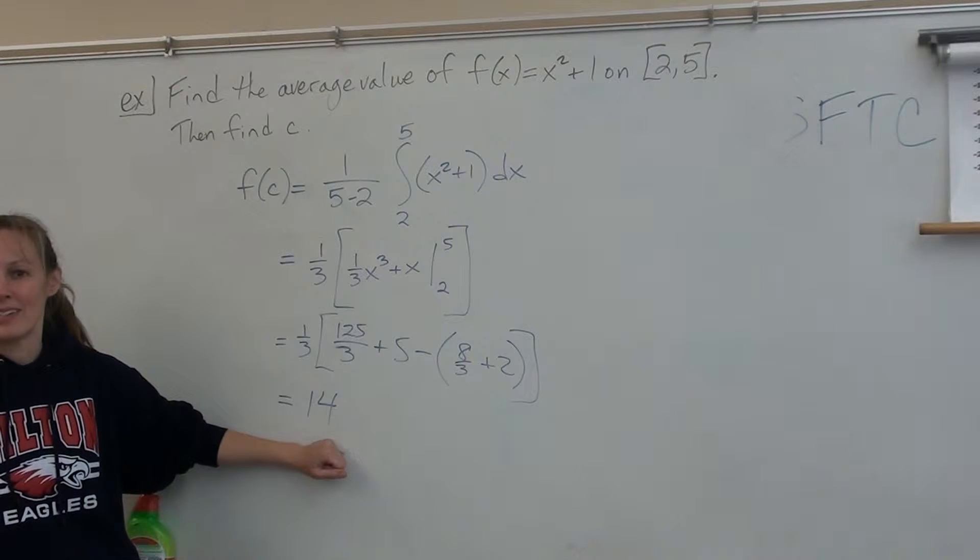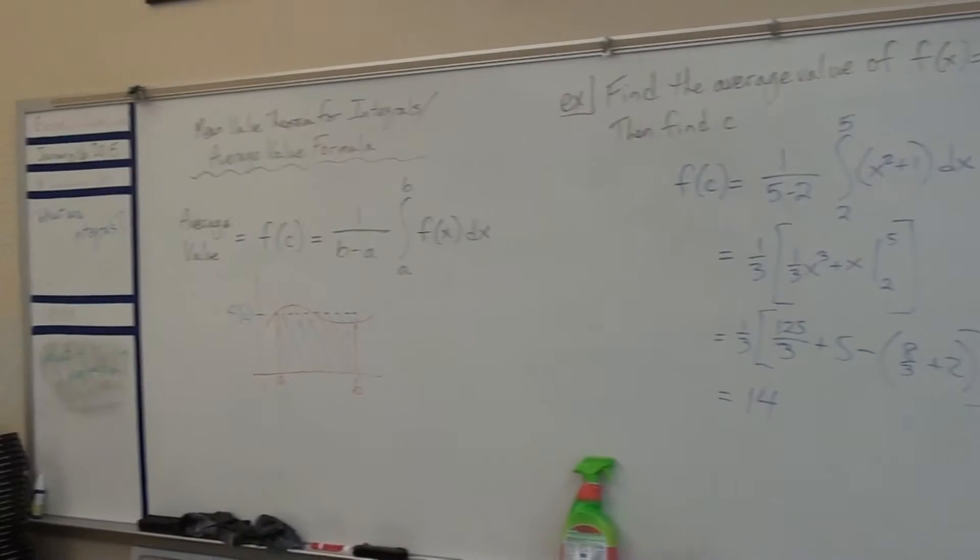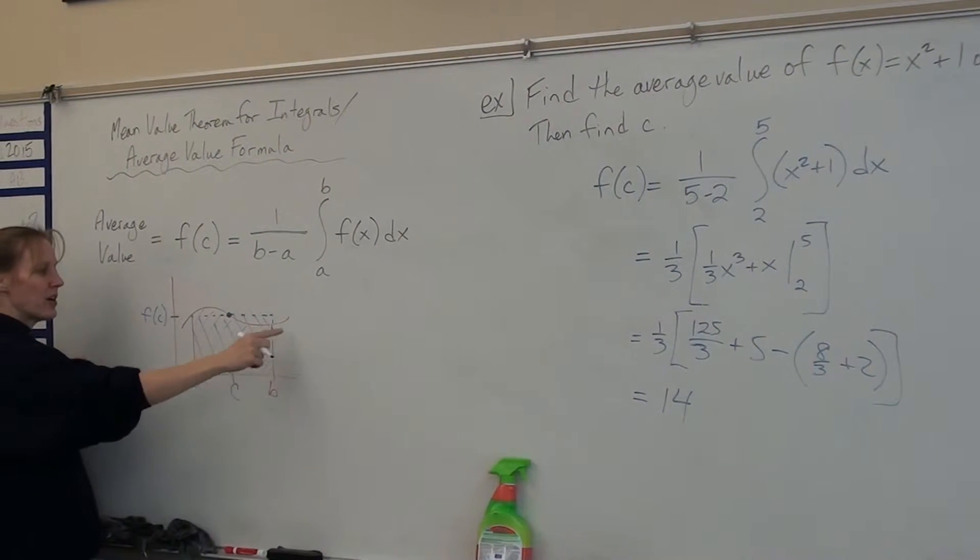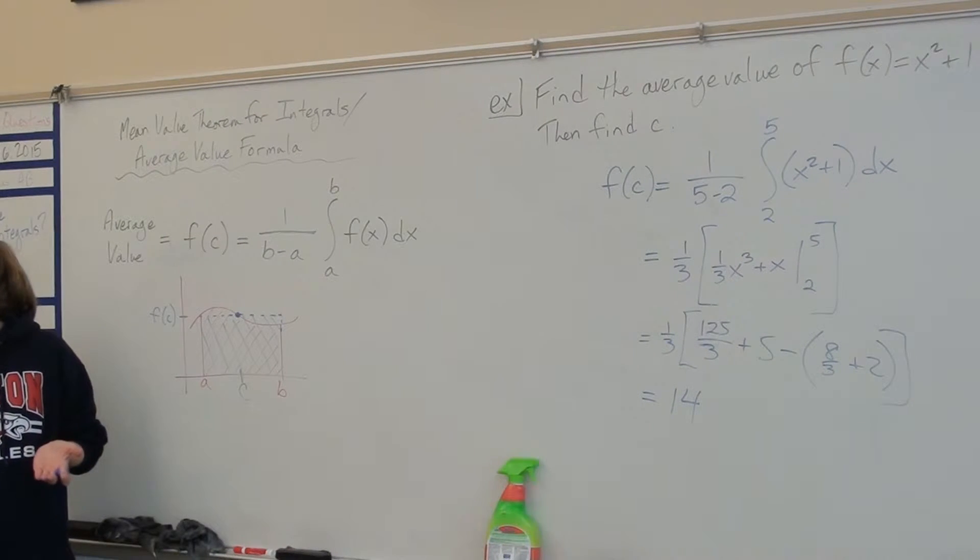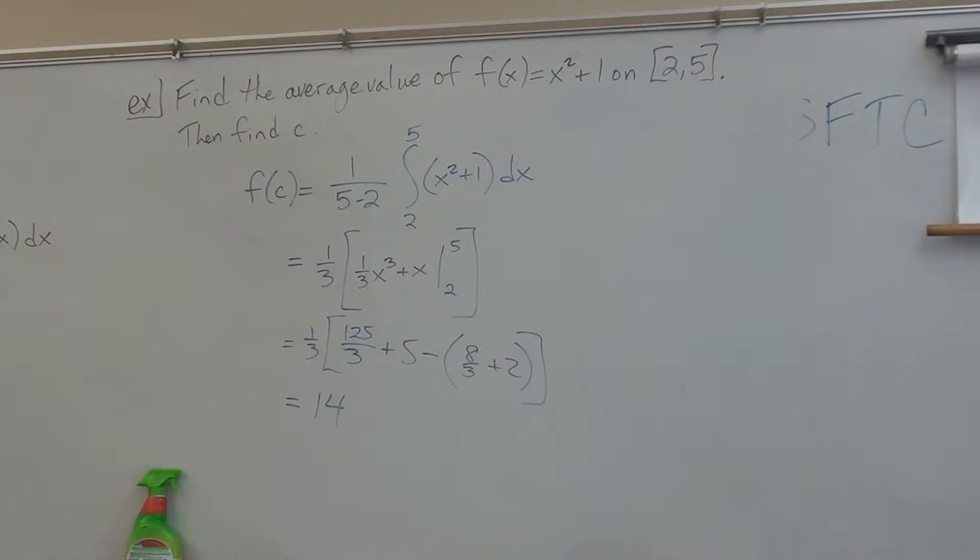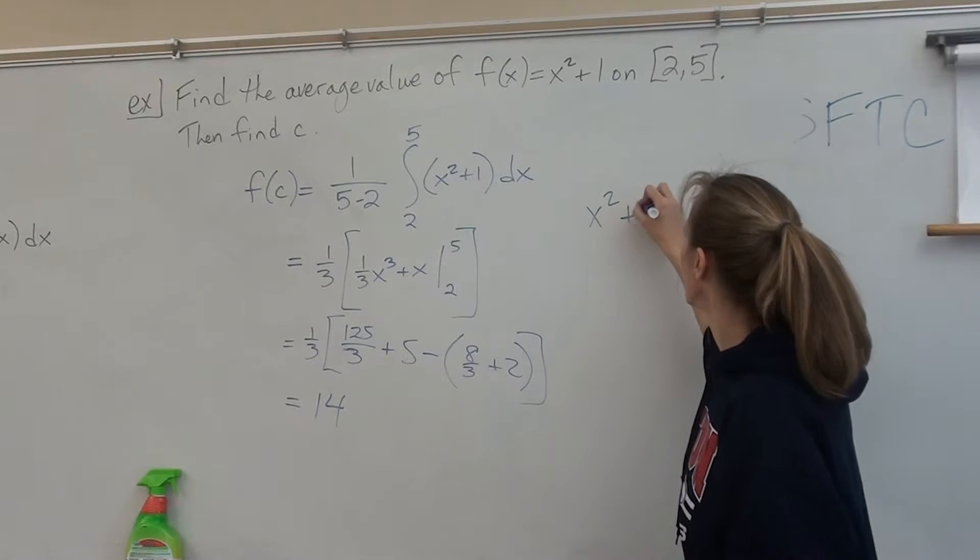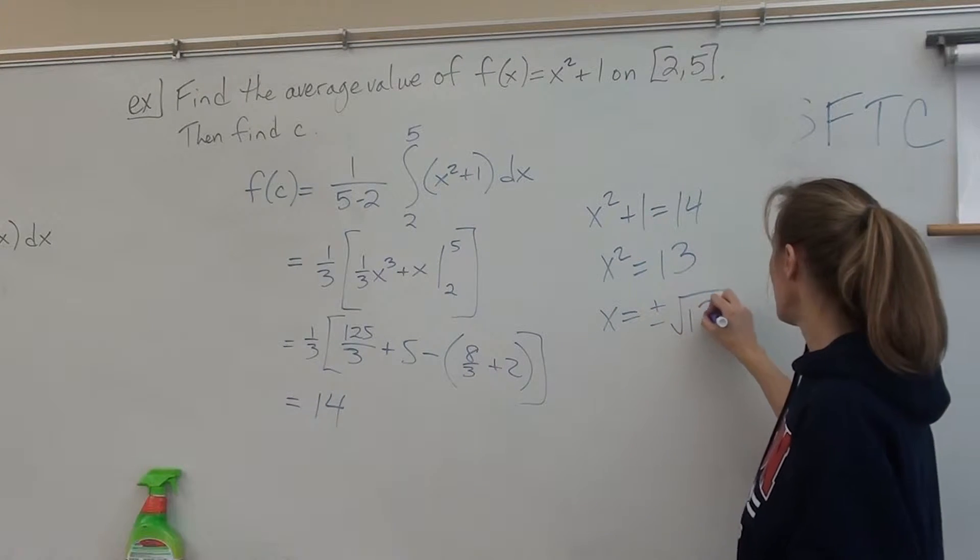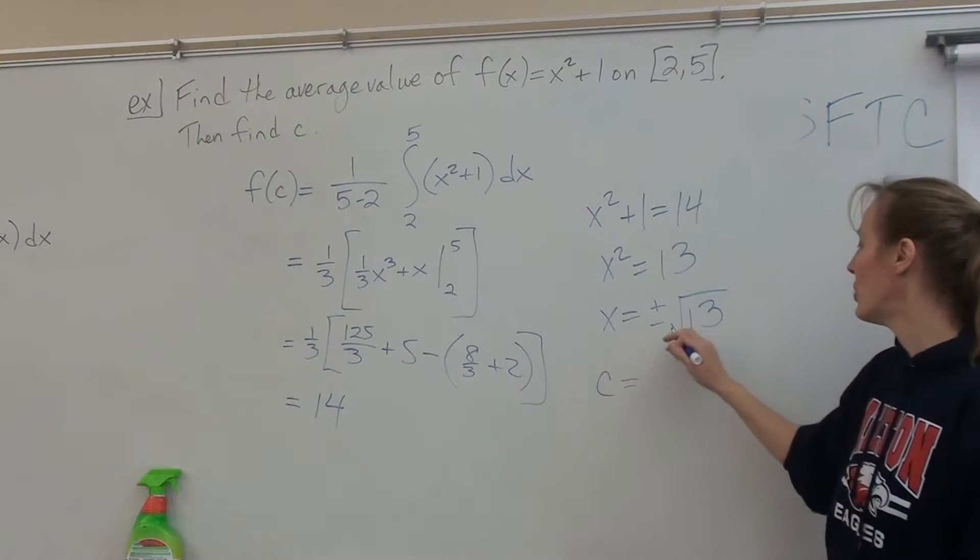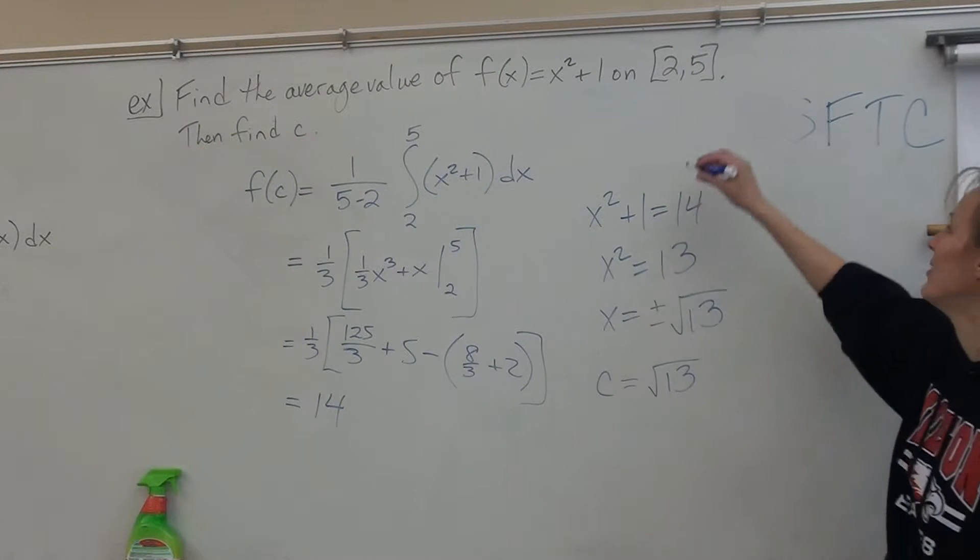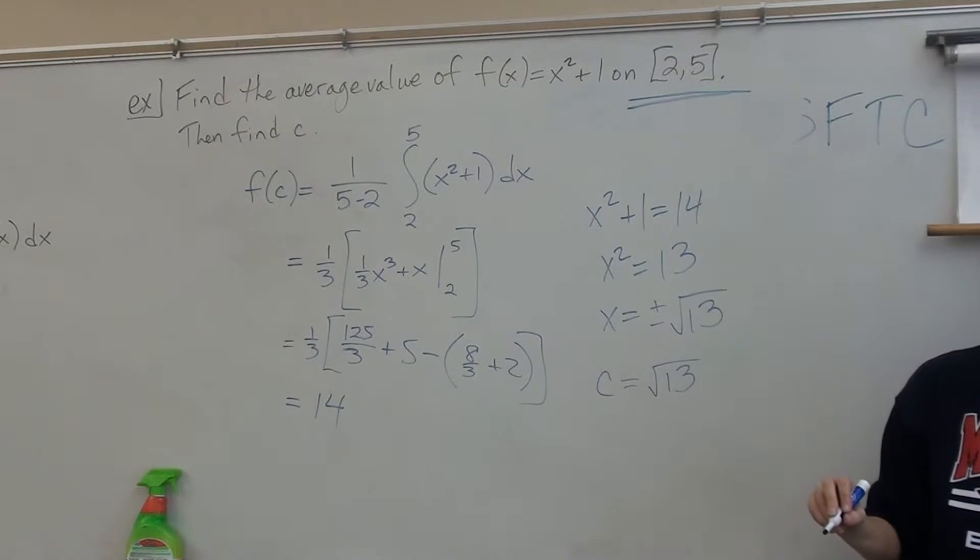Now, if they ask you to find C, on the graph, C would be the x value where the function and the average value happened to intersect. There might be more than one value for C. So here, to find C, all you're doing is finding the x value where the function has 14 as a y value. So you just set your function equal to 14. And I get x is plus or minus root 13. So does anyone know, is C both of these or one of them? And then which one? The positive one. It's the positive one. Why is it only the positive? Because it's the domain. Because you have to, the C has to be in this interval. Right, so absolutely. Very good.